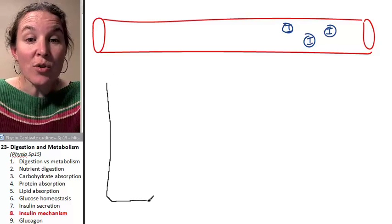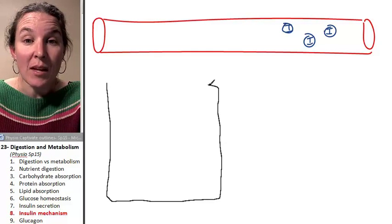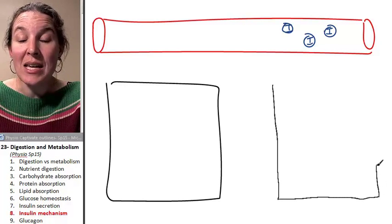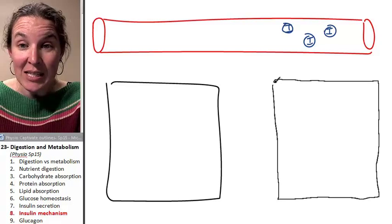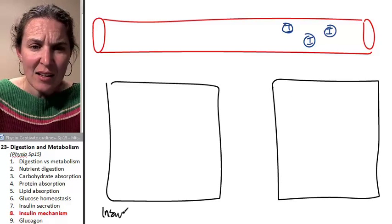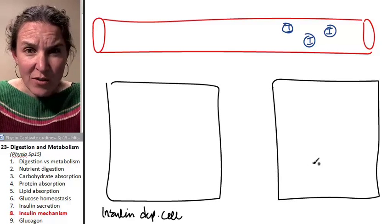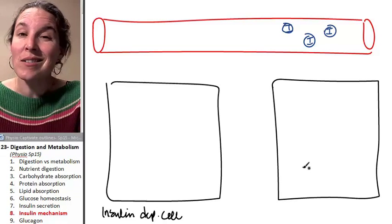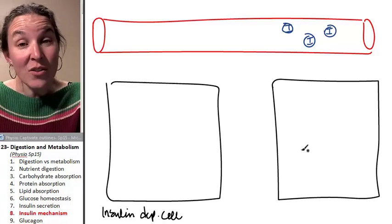Well, I'm going to draw you two different cells and show you two different mechanisms because one of them is the insulin dependent cell and most of your cells are insulin dependent. Brain cells are not, but most of your other cells are.